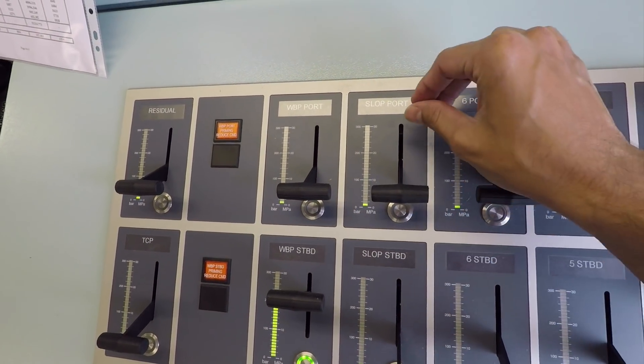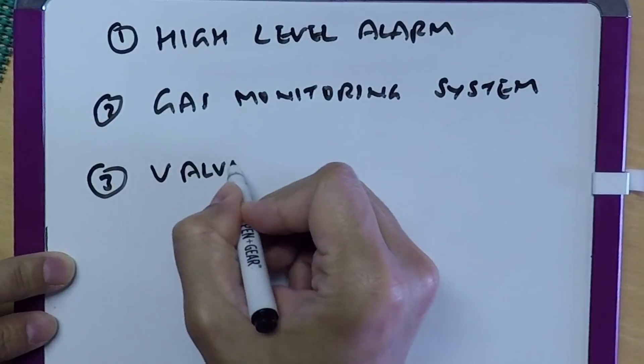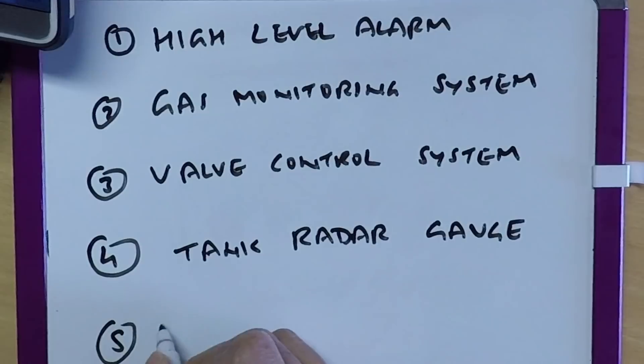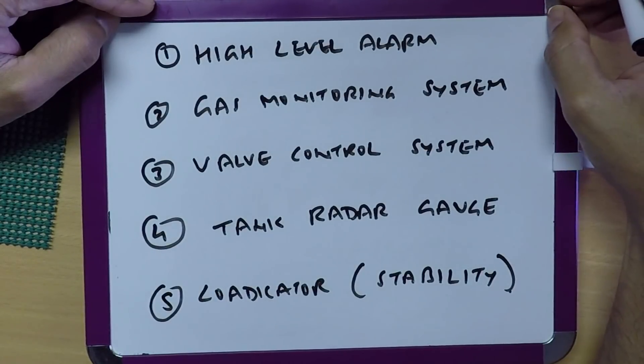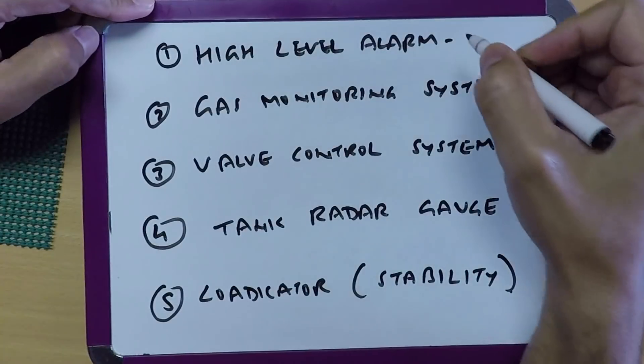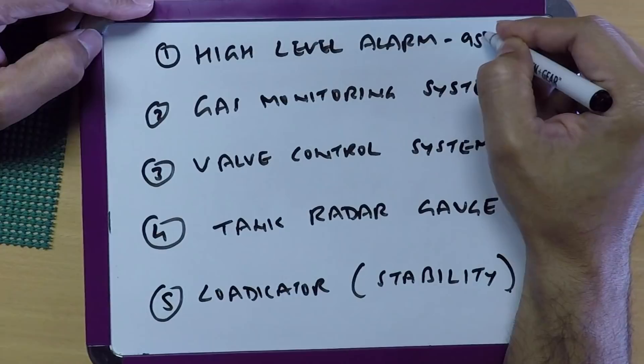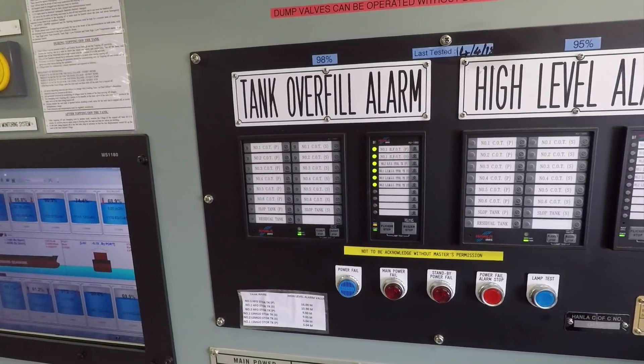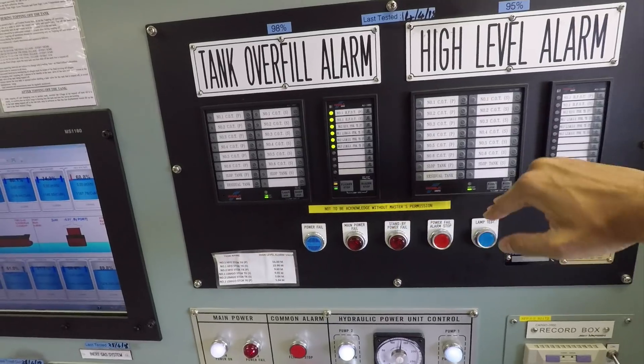We have some other systems as well. For example, we have a high level alarm. This alarm is set so that when we are loading, we do not overfill the tank. And this alarm is set at 95% level as well as 98% level. 95% is high level alarm and 98% is overfill alarm. So these are the controls, and when the tank is filling and when it crosses this level, this indicates visual and audible alarms here.